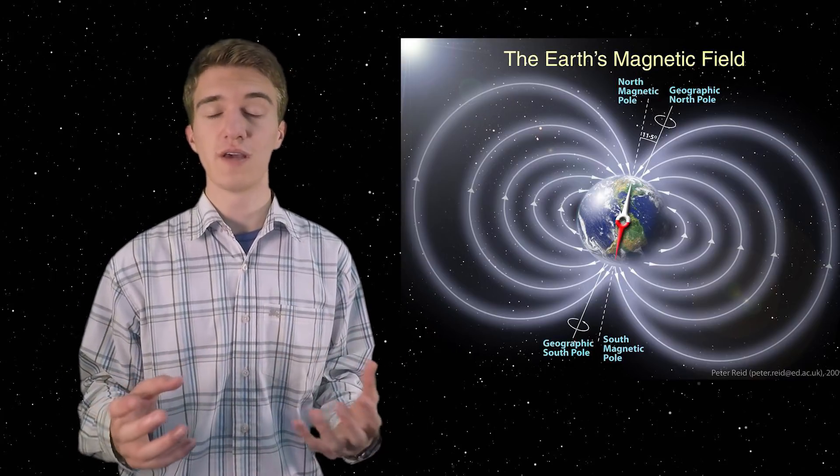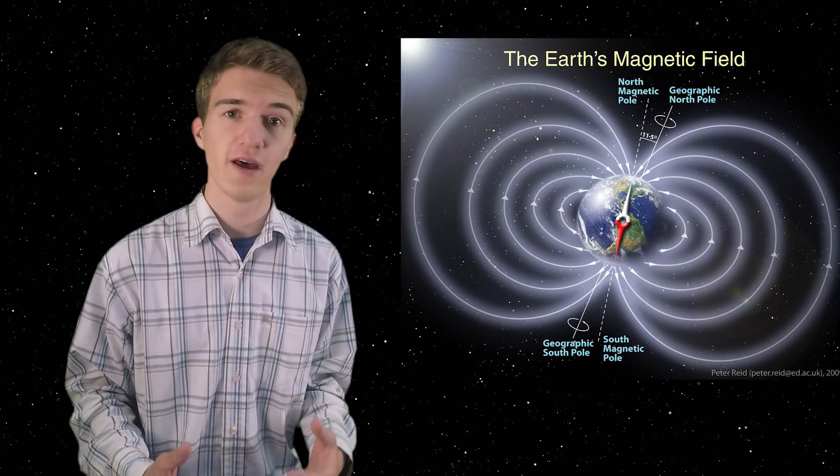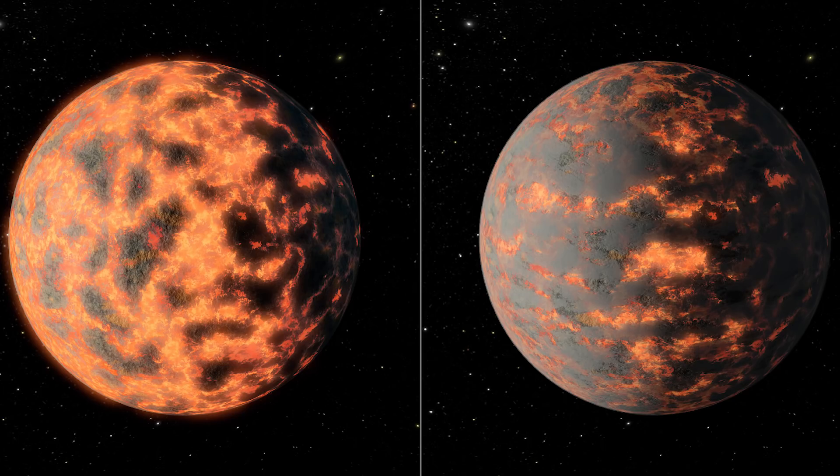And because of that, the rotating metal actually creates what turns out to be a magnetic field. And over time, that molten rock actually cools down, which creates a crust. And that's what we live on here on Earth.